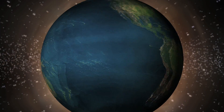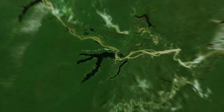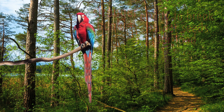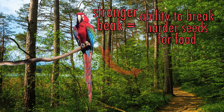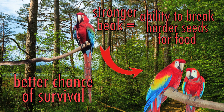Evolution by natural selection occurs when there is an adaptation made by a certain species. Variation in traits occur, and those variations are passed on from generation to generation if the trait promotes survival.